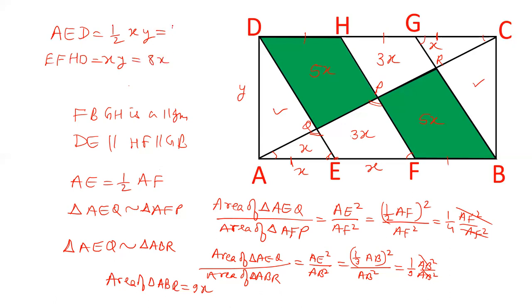So AED is half of xy. That is 4x. And we already have this part x. So this part is 3x. We already have this x and this is 3x.